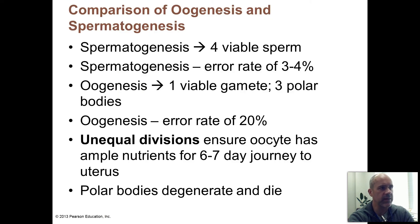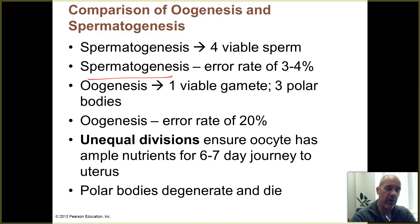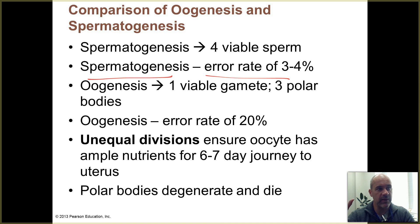Comparing oogenesis and spermatogenesis, there are notable differences in error rates. With spermatogenesis, the error rate is only about 3–4%. An error could be an inappropriate separation of chromosomes — typically if a cell has an inappropriate number of chromosomes it is non-functional, since you need all genetic recipes in the correct number.